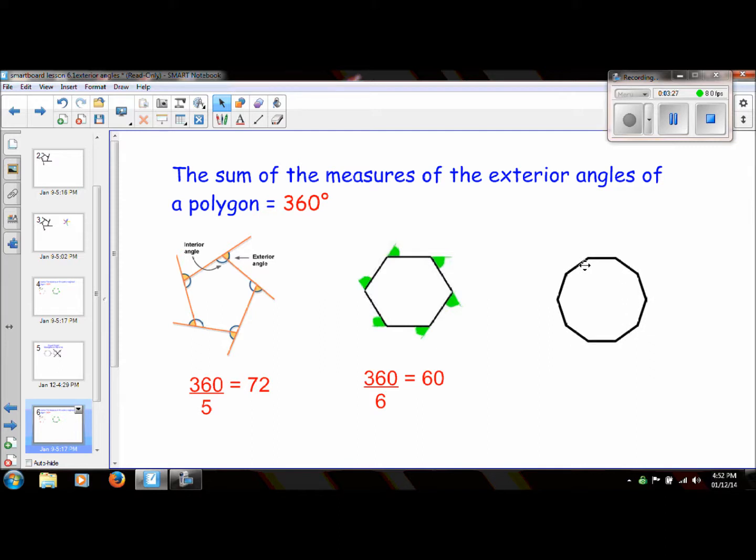And here I have a decagon. It has ten sides. And I'm going to do the same thing. 360 divided by 10 is 36 degrees. So if I were to extend each one of these sides and create exterior angles, each one would equal 36 degrees.